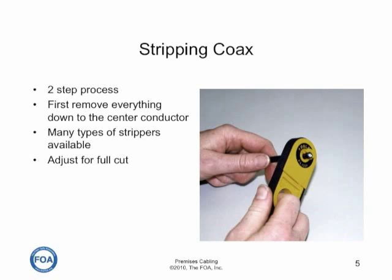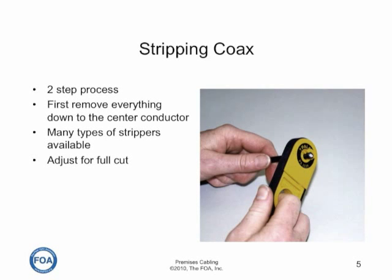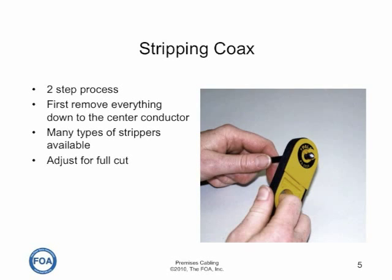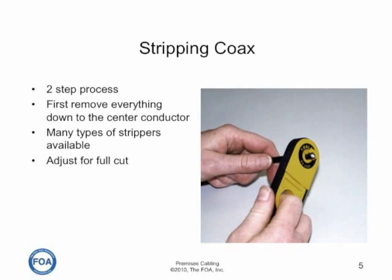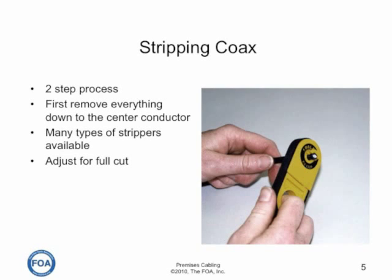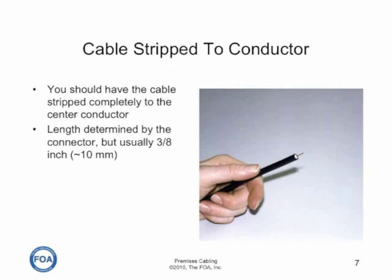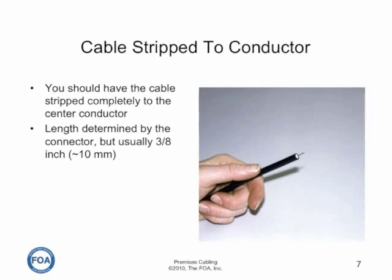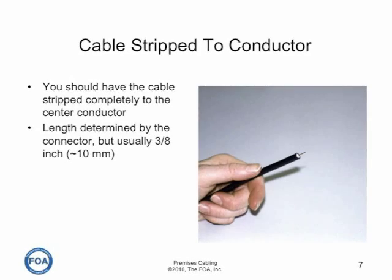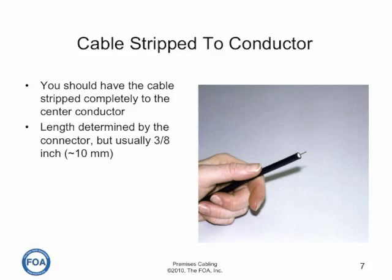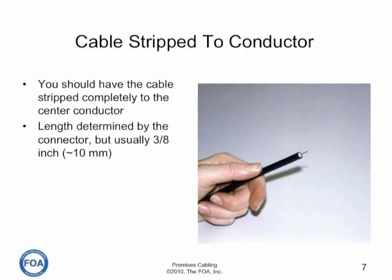Special tools are used for stripping coax. It's a two-step process. The first step is to remove everything down to the center conductor. There are many types of strippers available, like this inexpensive one here, but you have to adjust them to make sure you get a full cut but don't nick the center conductor. After cutting with the stripper, remove everything down to the center conductor. It sometimes helps to twist the foam core to break it loose from the center conductor. The cable should now look like this, with the center conductor visible. The length of the center conductor is determined by the connector, but it's usually about 10 millimeters, or 3/8 of an inch.